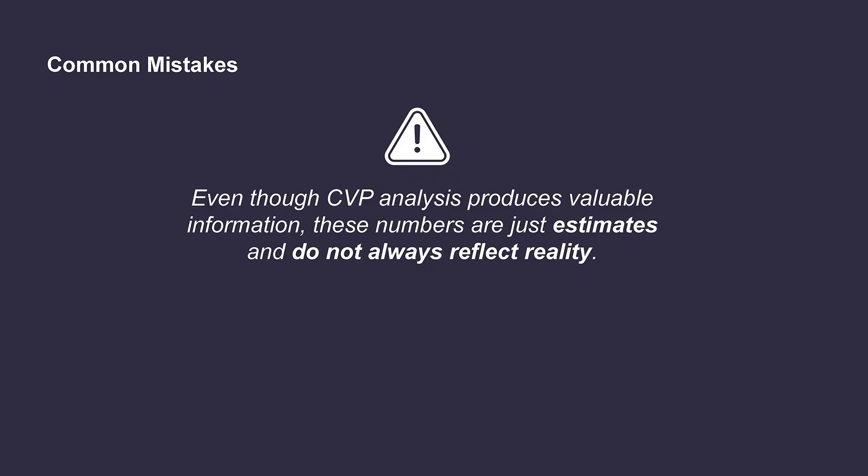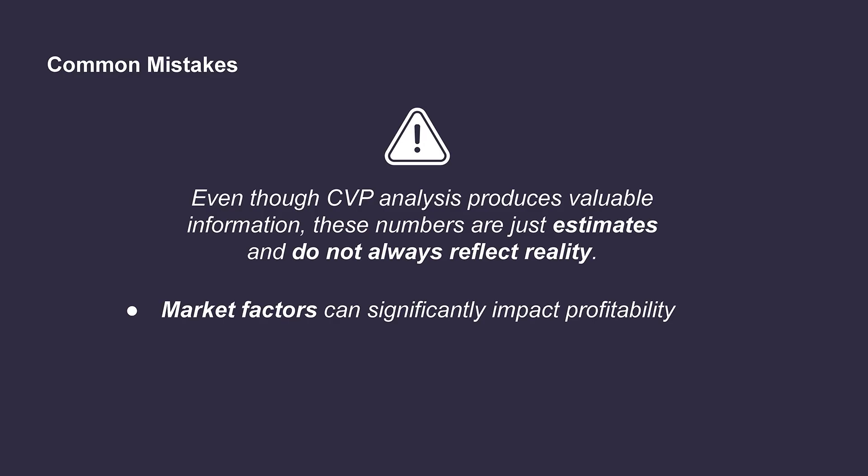It's important to remember that even though cost-volume-profit analysis produces valuable information, these numbers are just estimates and do not always reflect reality. Companies don't always know the exact prices, variable costs, and fixed costs that will be incurred in the future. It's possible that there could be price fluctuations for a company's raw materials as a result of market factors such as inflation, which could significantly impact a company's profitability. For example, if the price of materials required to produce each cell phone increased unexpectedly due to inflation, this would decrease their unit contribution margin and mean that they would need to sell more units than planned in order to break even. However, since they've already done the CVP analysis and understand the relationship between cost, volume, and profit, they may be able to increase their selling price to account for this difference.